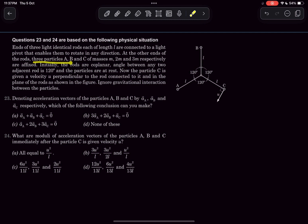At the other ends of the rods, three particles A, B, and C whose masses are m, 2m, and 3m are fixed. Initially, the rods are coplanar. The angle between any two adjacent rods is 120° and the particles are at rest. Now the particle C is given a velocity u perpendicular to the rod, and we have to comment on these two particular questions.